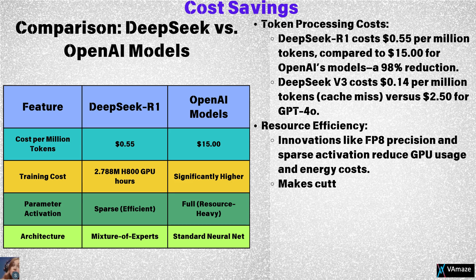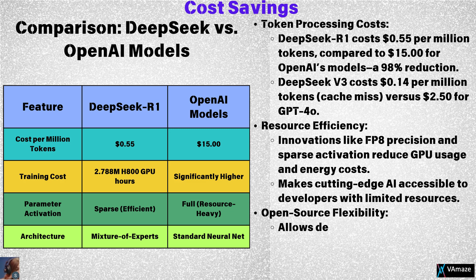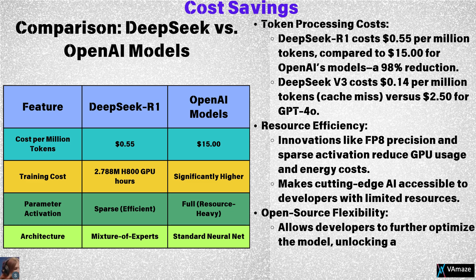Let's compare DeepSeek to proprietary AI models. DeepSeek offers unmatched efficiency by activating only necessary parameters, while proprietary models engage their full networks. Its training costs are significantly lower, and its architecture, which includes the Mixture of Experts design, delivers advanced performance at a fraction of the cost.